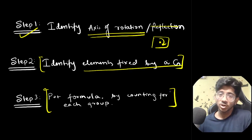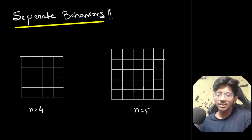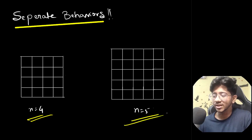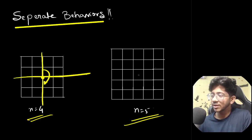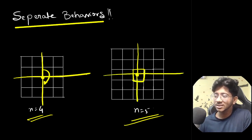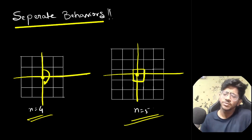We have the n=4 and n=5 cases to consider. The first thing to notice is that there is separate behavior when n is even versus odd. When n is odd, there is a particular cell exactly at the axis of rotation, which changes the behavior. So we must separate the even and odd cases and handle them with two different formulas.